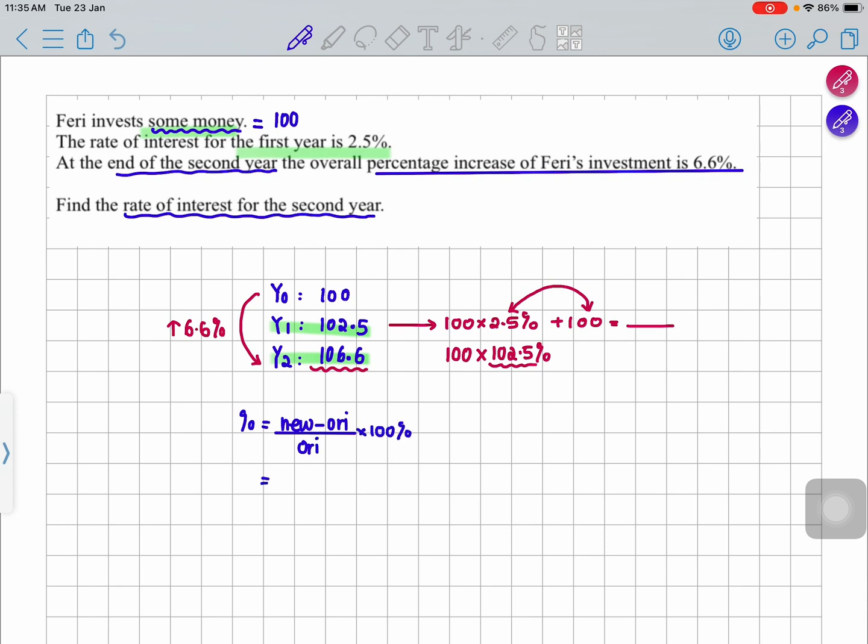Original means the year 1 value because you are studying for second year, the rate of interest for the second year. So I will do 106.6 minus 102.5 divided by 102.5 times 100, which will give me 4% increment, which is your answer.